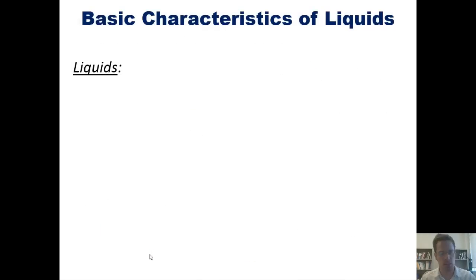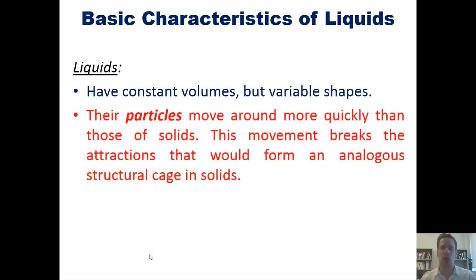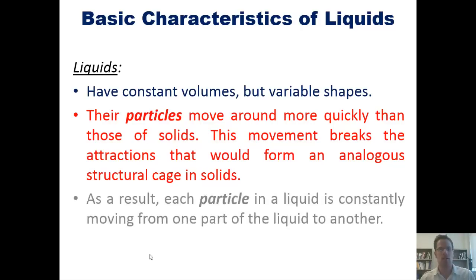So when compared with solids, liquids also have constant volumes but varying shapes. Their particles move around more quickly than those of solids. This movement breaks the attractions that would form an analogous structural cage in solids. As a result, each particle in a liquid is constantly moving from one part of the liquid to another.